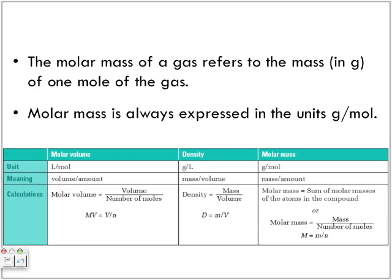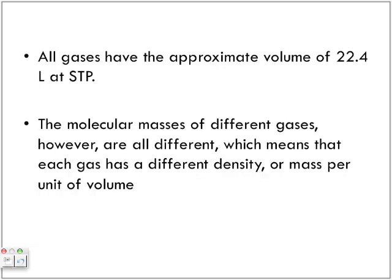The equation for density is mass divided by volume. A key point: all gases have an approximate volume of 22.4 liters at STP. So if a gas is at STP and you need volume, that's your hint — the volume will be 22.4 liters. Molecular masses of different gases are all different, which means each gas has a different density, even though all gases at STP occupy the same volume.